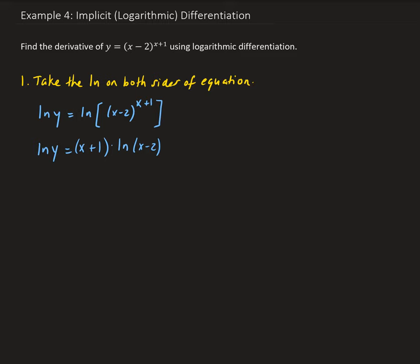Doing this will now allow us to apply implicit differentiation on both sides. On the left-hand side, we have 1 over y, because the derivative of natural log u is 1 over u times u prime. So we get 1 over y times dy/dx.